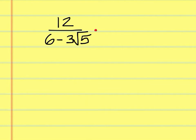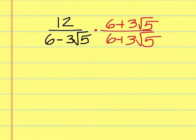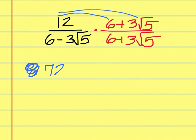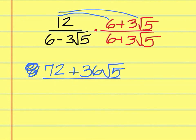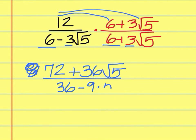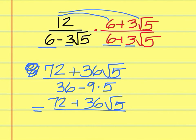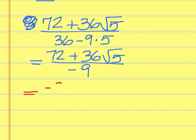Multiply the top and the bottom by 6 plus 3 square root of 5. On the top, when I multiply, I get 72 plus 36 square root of 5. On the bottom, 6 times 6 is 36, and then 3 times 3 is 9, and square root of 5 times square root of 5 is 5, so that's 9 times 5 equals 45. The top stays 72 plus 36 square root of 5, and on the bottom 36 minus 45 is negative 9. We can divide everything by negative 9 to come up with negative 8 minus 4 square root of 5, and the bottom cancels out.